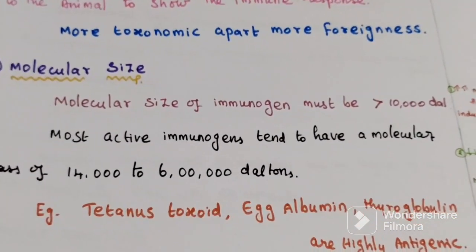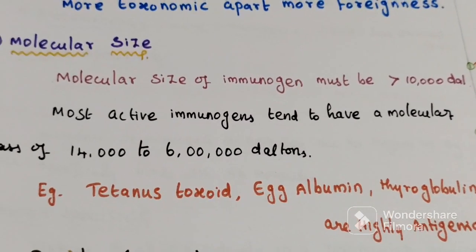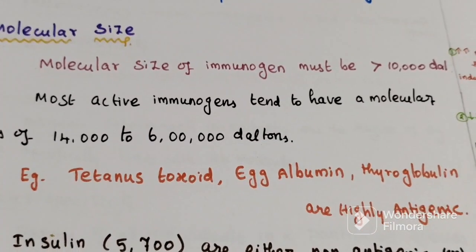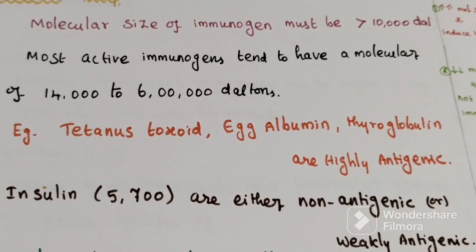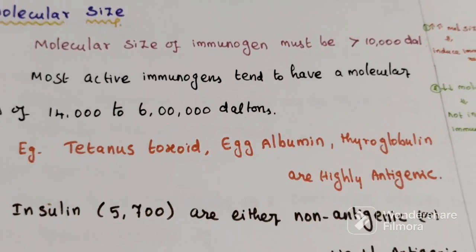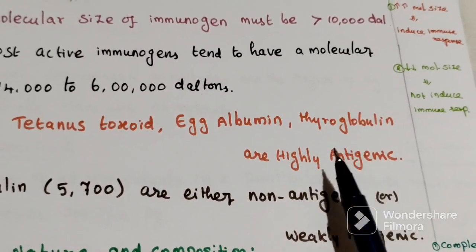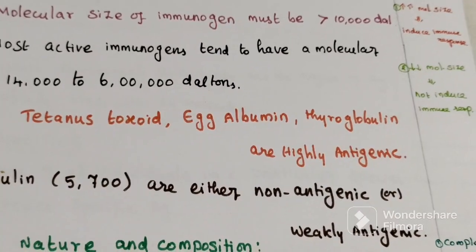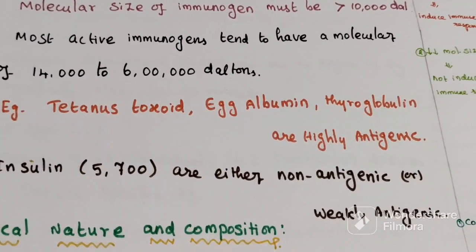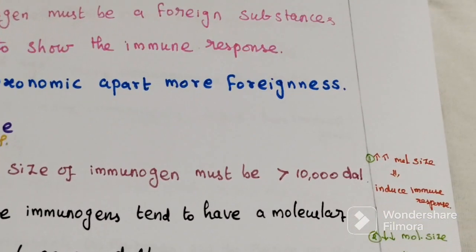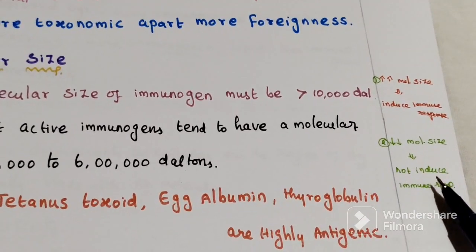The second factor is molecular size. The molecular size of immunogens must be more than ten thousand daltons to induce an immunological response. If the size is small, it will not induce immunogenicity. Most active immunogens tend to have a molecular mass of fourteen thousand to six hundred thousand daltons. For example, tetanus toxoid, egg albumin, and thyroglobulin are highly antigenic because they have great molecular mass. Insulin, with five thousand seven hundred daltons, is either non-antigenic or weakly antigenic. Increasing molecular size means it can induce an immune response; low molecular size means it cannot.